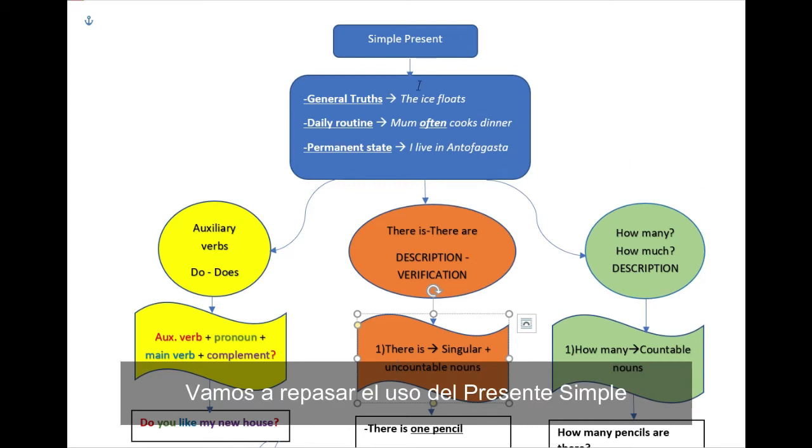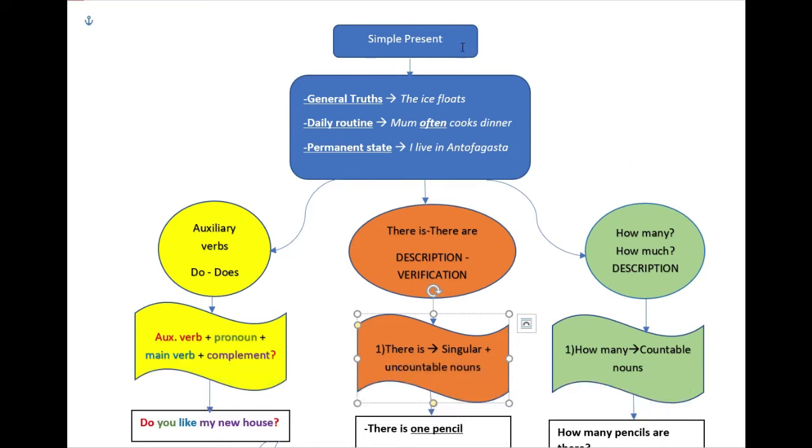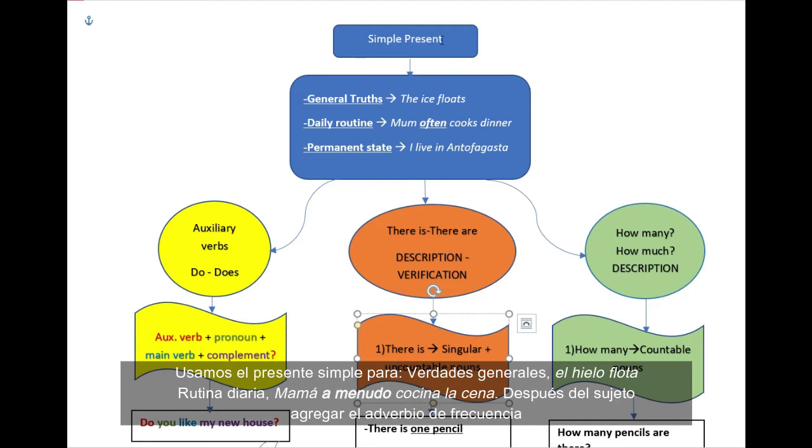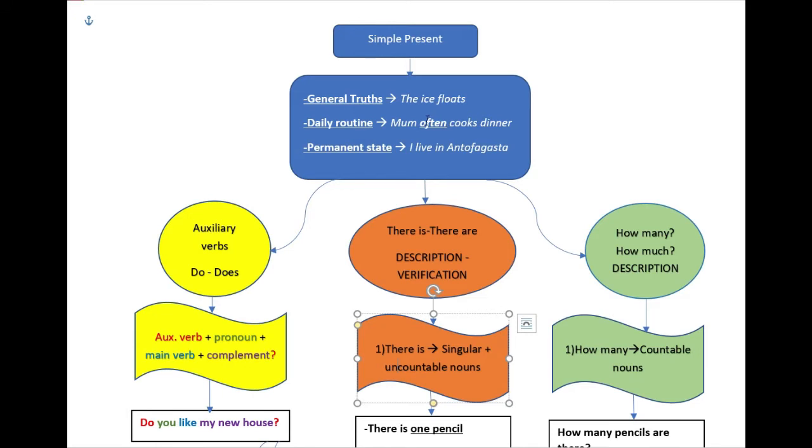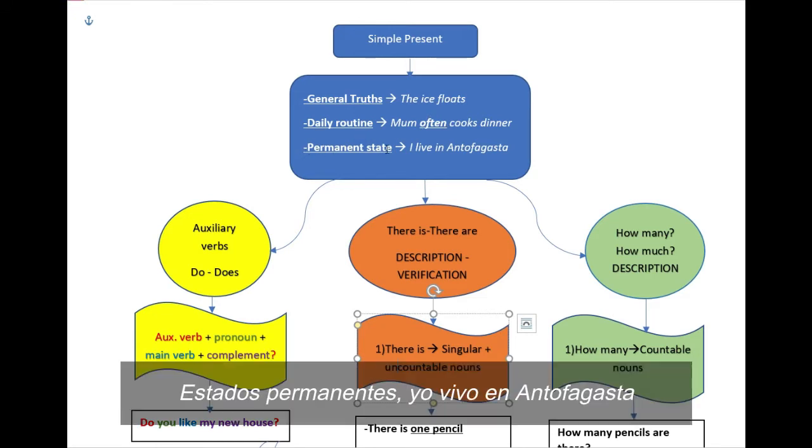Let's review simple present use. We use simple present for general truths. The ice floats. Daily routine. Mom often cooks dinner. Remember, after the subject, you have to add a word about frequency. Always, often, sometimes, etc. Permanent state. I live in Antofagasta.